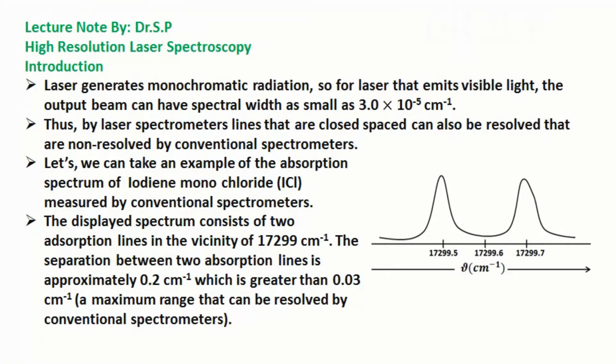The displayed spectrum consists of two absorption lines in the vicinity of 17,299 per cm. The separation between two absorption lines is approximately 0.2 per cm, which is greater than 0.03 per cm, which is a maximum range that can be resolved by conventional spectrometers.